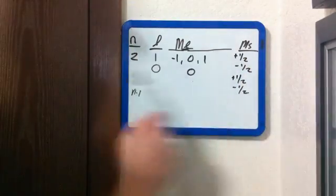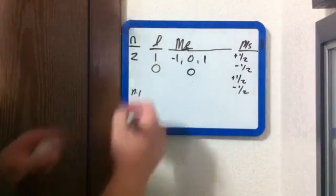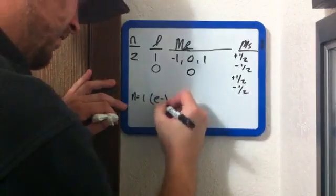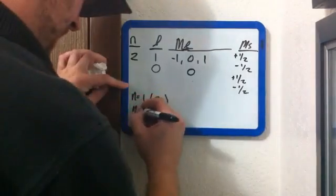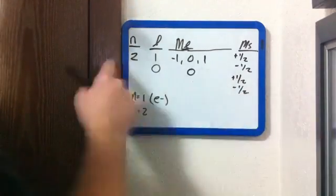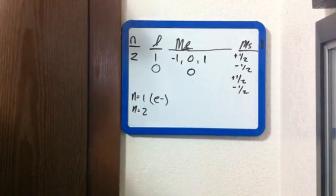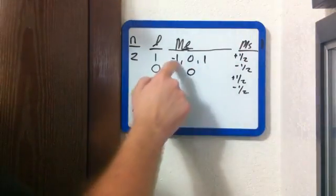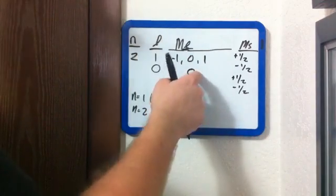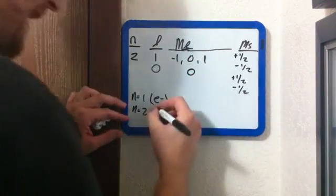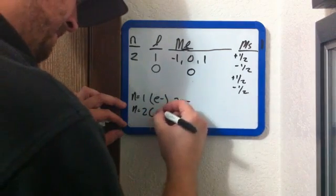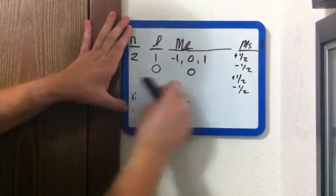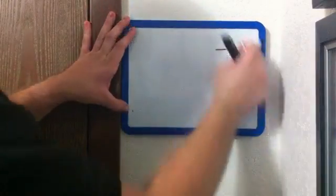Those are all the different configurations of quantum numbers for the n equals two state. From the n equals one state I had a total of two electrons. For n equals two, the quick easy way I look at each row is I take my m sub l values and multiply each by two because of the spin. So two, four, six — I have six in this row, and two in this row. Six plus two is eight. So I have two electrons for n equals one, and eight electrons for n equals two.